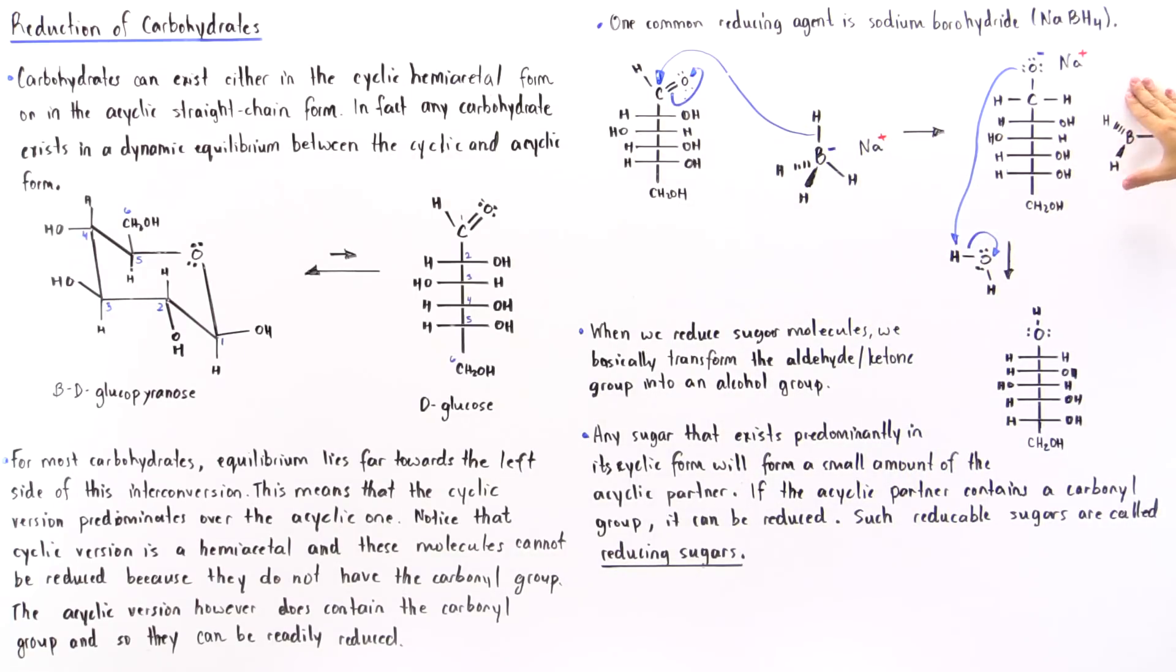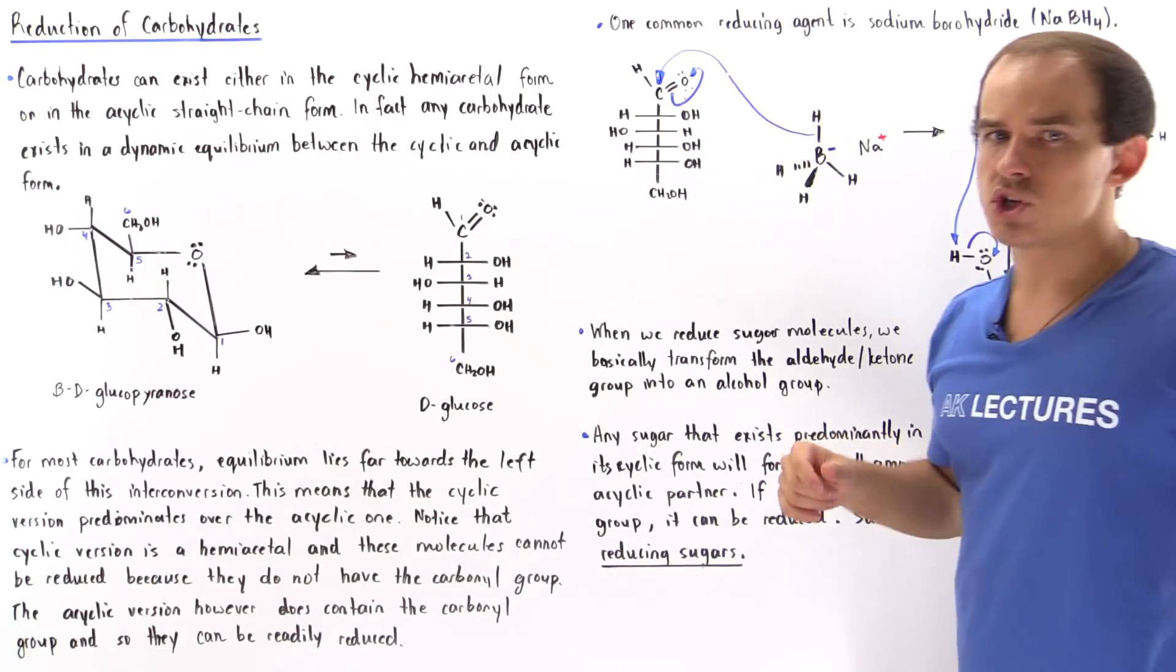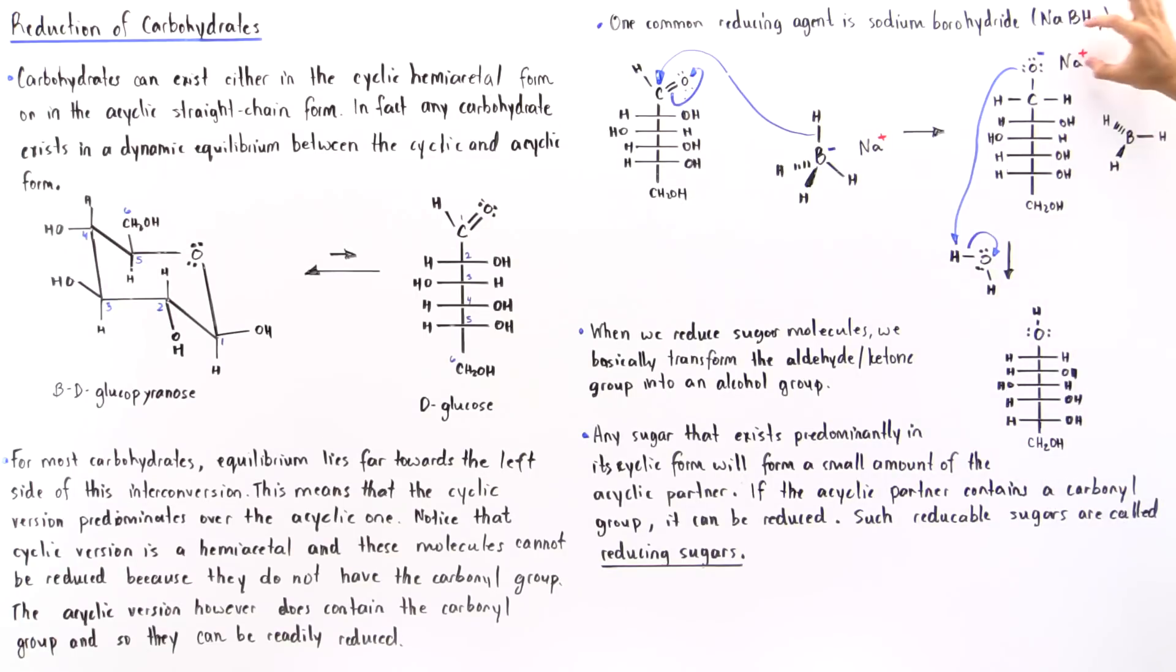This forms an intermediate in which we have a negative charge on the oxygen. We also form BH3, the boron that now contains three H atoms. Because it no longer contains a negative charge, the sodium, which does contain a positive charge, will now shift and move to be close next to the oxygen, which contains our negative charge.